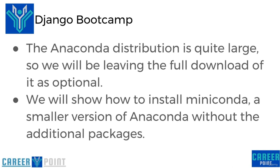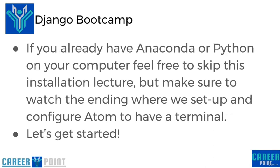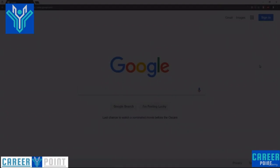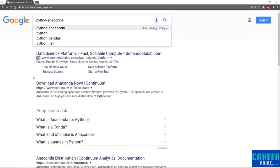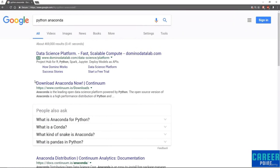That way, if you don't have a lot of space on your computer, you can just download that. If you already have Anaconda or Python on your computer, feel free to just skip this installation lecture, but make sure to watch towards the end where we show how to set up and configure Atom to have a terminal. Let's get started by going to Google in our browser and typing in Python Anaconda. The very first link should be the continuum.io/downloads page.